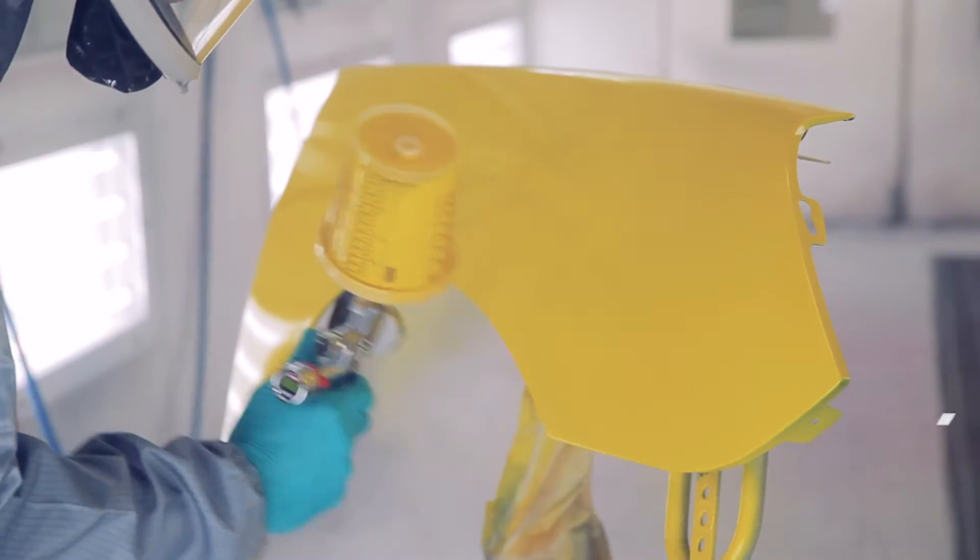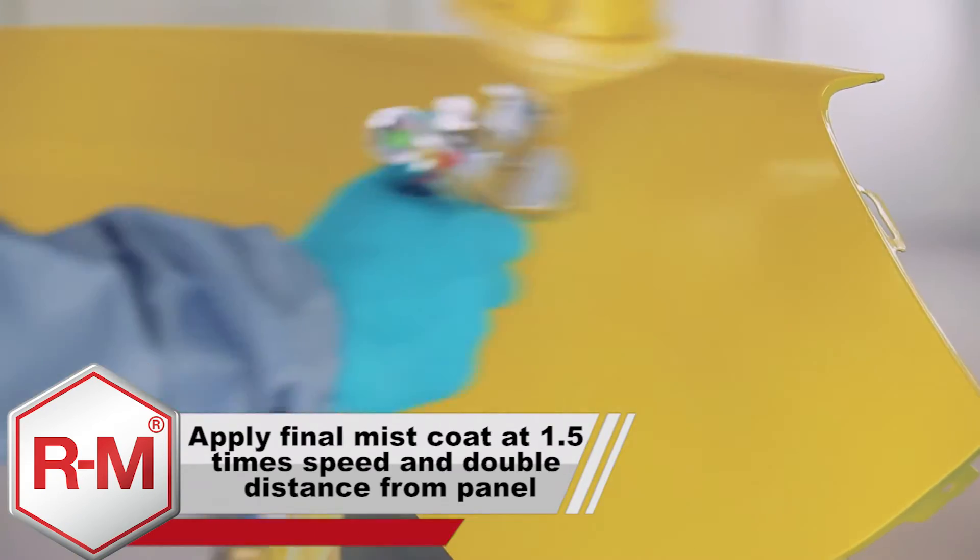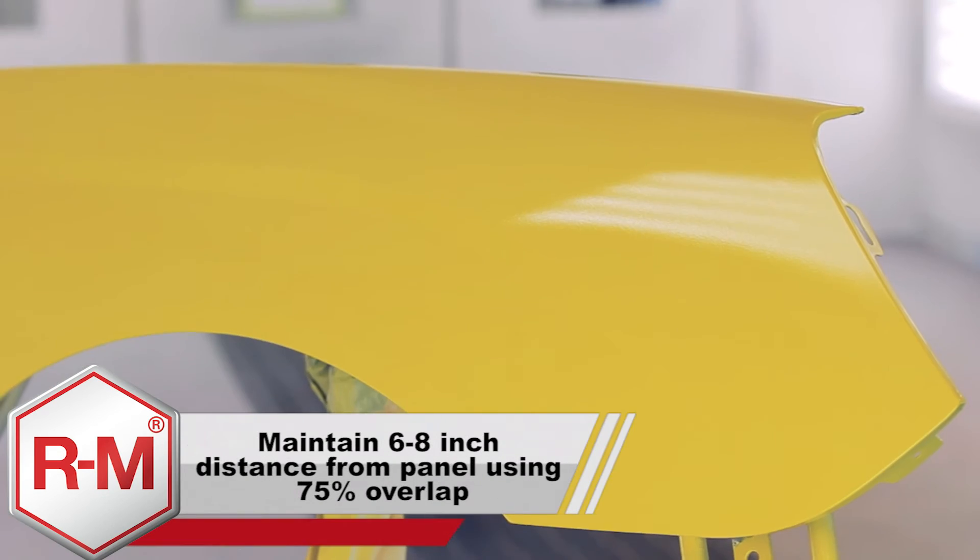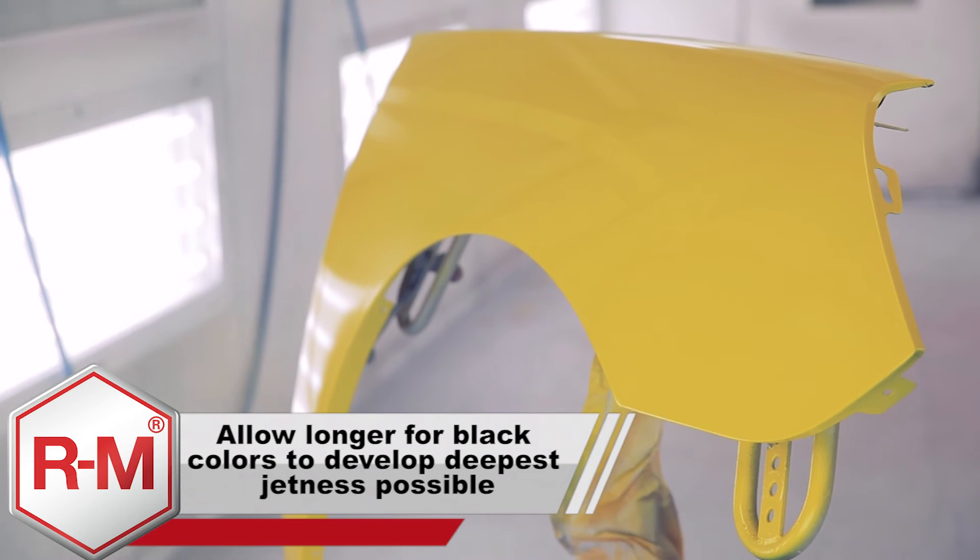Reapply base coat using proper spray gun distance and overlap. Finish with a final mist coat if necessary by increasing your application speed 1.5 times as fast, maintaining the 6-8 inch distance. Allow the panel to completely flash per the product recommendations.